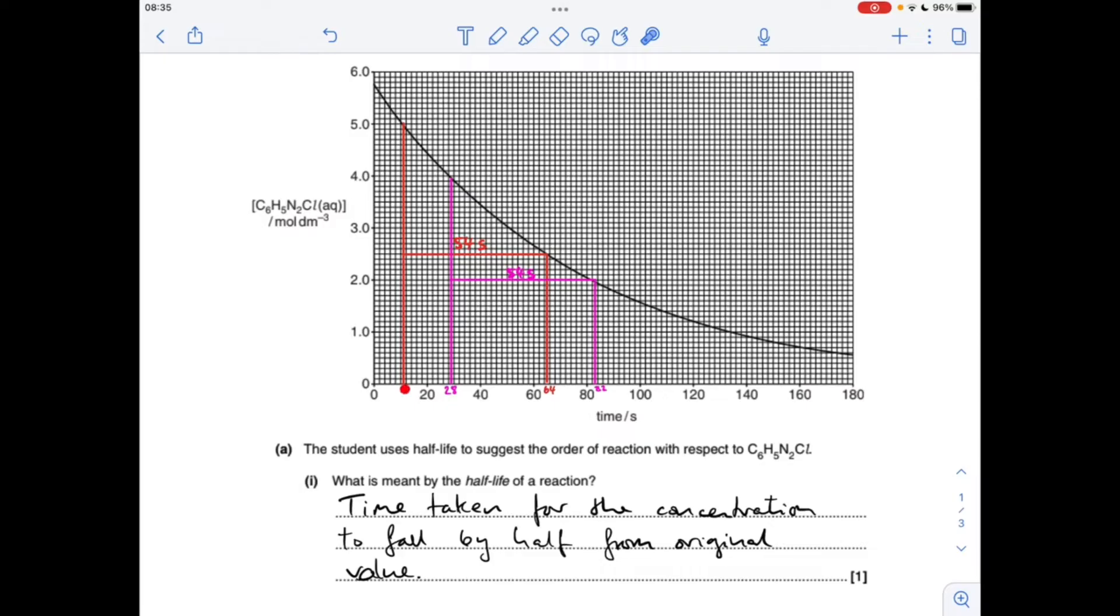Hope you're going to read the numbers okay, but I will read them out anyway. So that's gone from 10, that's 10 seconds to 64 seconds. So the time taken to go from 5 to 2.5 is 54 seconds. So that is a half-life.